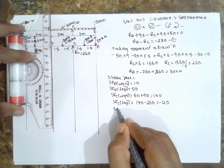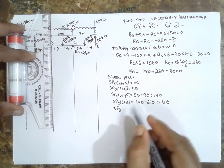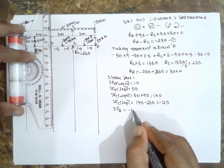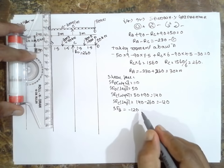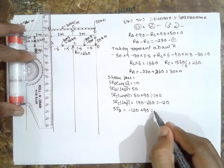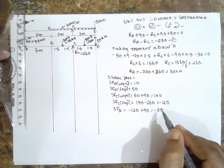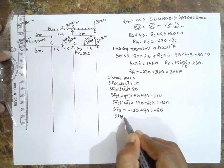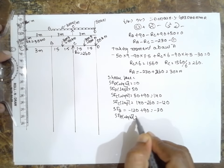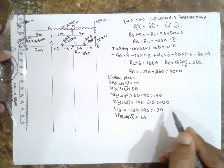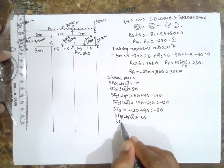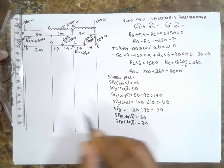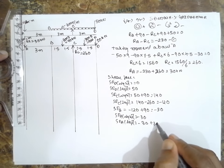At B there is no point load, so single value: previous value minus 120 plus 90 equals minus 30. At A right side, because there is a load, the previous value is minus 30. SF at A left side: minus 30 plus the upward reaction of 30 equals 0. This confirms our reactions are correct.